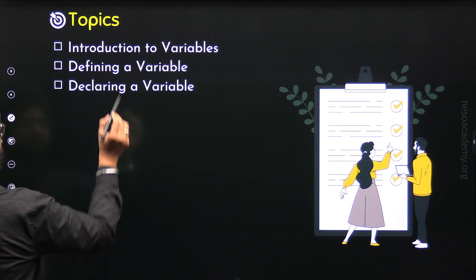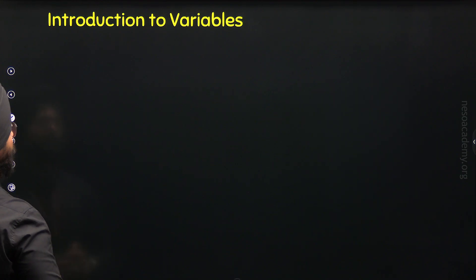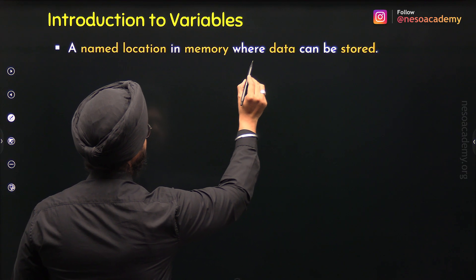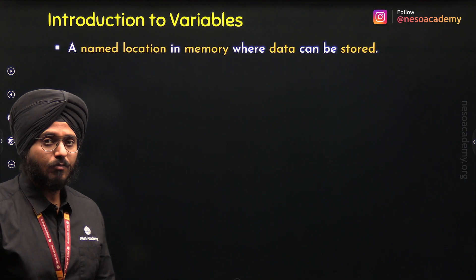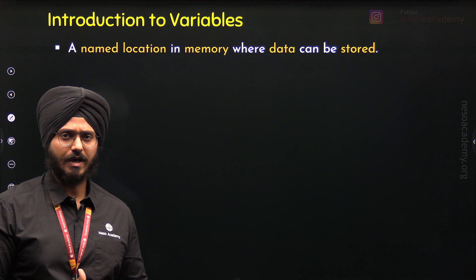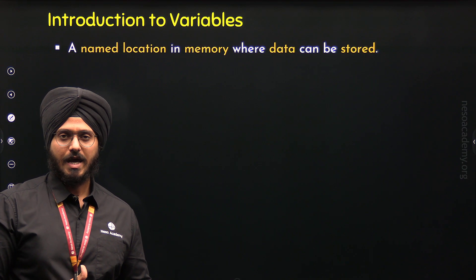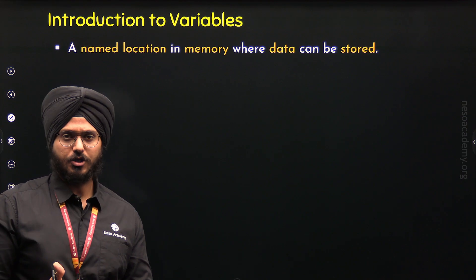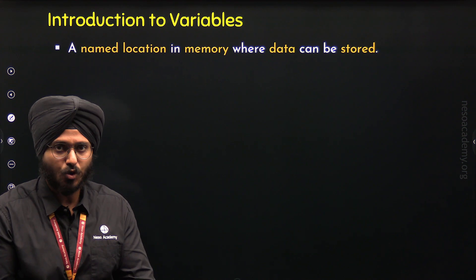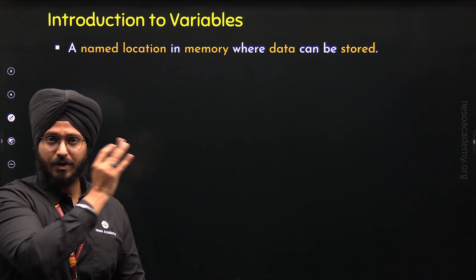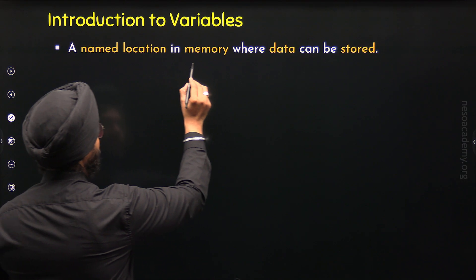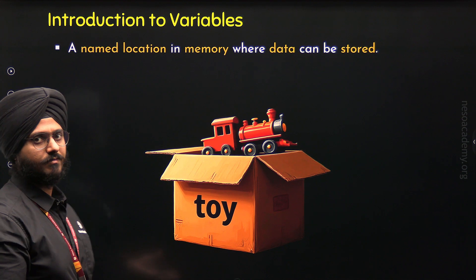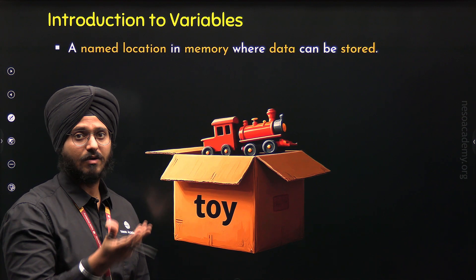Let's get started with the first topic: Introduction to Variables. So what are variables? A variable is a named location in memory where data can be stored. A variable is a named object, and an object is a storage location where we can store some data. You can think of a variable as a box where you can store some item — this analogy will help you understand exactly what a variable is.